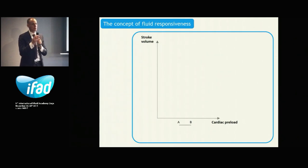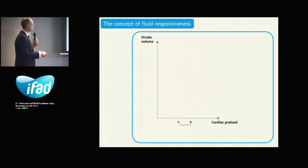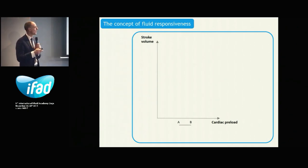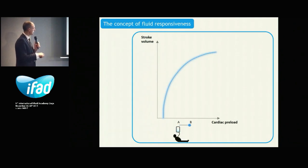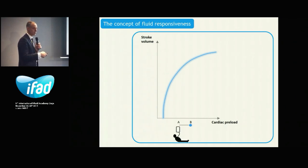What is the concept of fluid responsiveness? The relationship between stroke volume and cardiac preload — the Frank-Starling relationship — is not linear, it's curvilinear. When we give fluid to a patient, we increase cardiac preload, with the expectation that we will increase stroke volume and cardiac output.